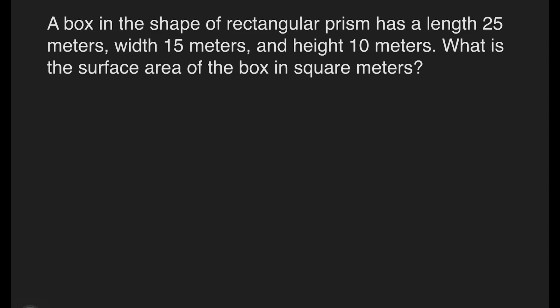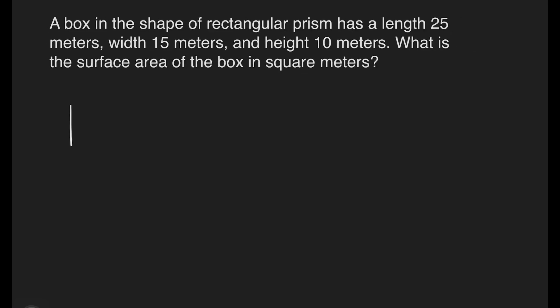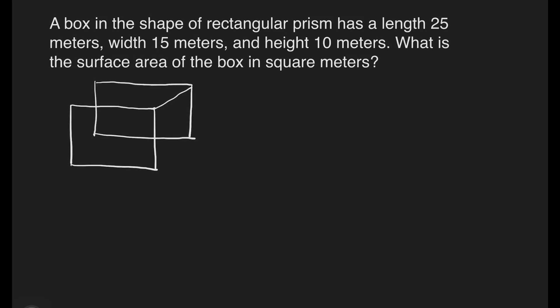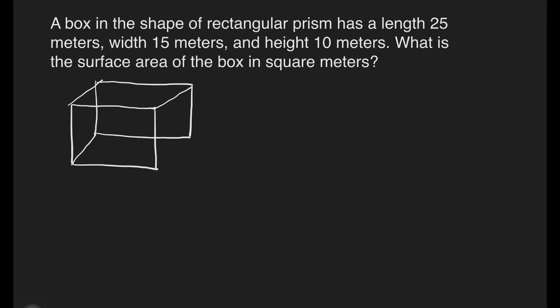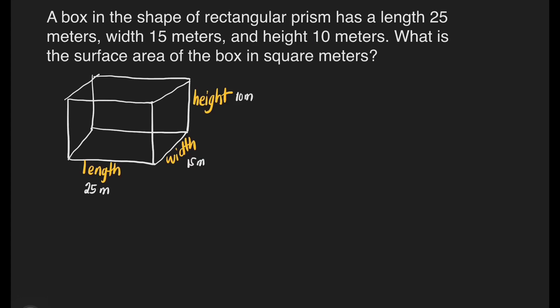How does a rectangular prism look like? A rectangular prism can be defined as a three-dimensional solid shape which has six faces that are rectangles. It has a length of 25 meters, width of 15 meters, and height of 10 meters.